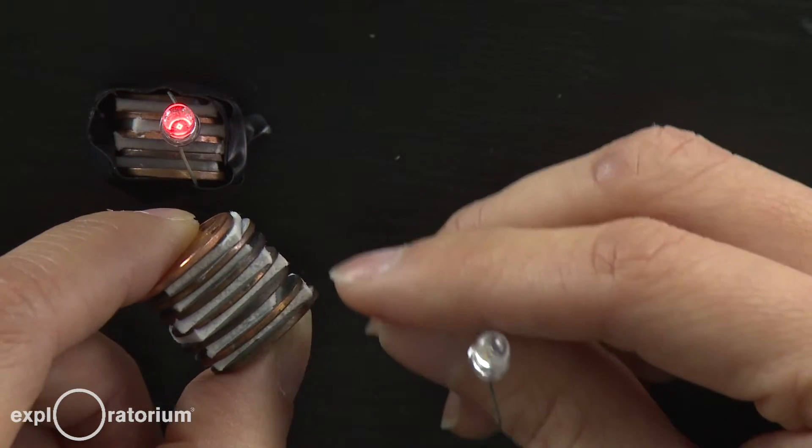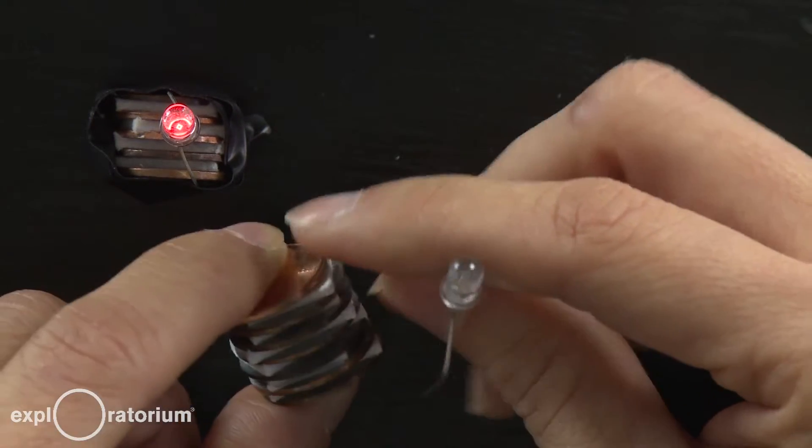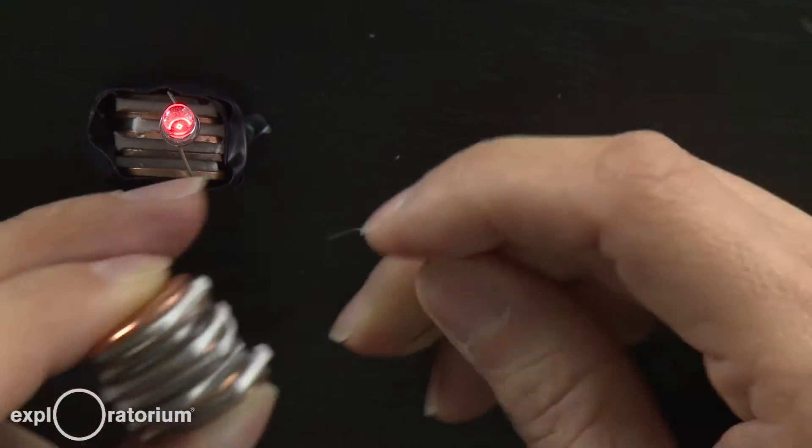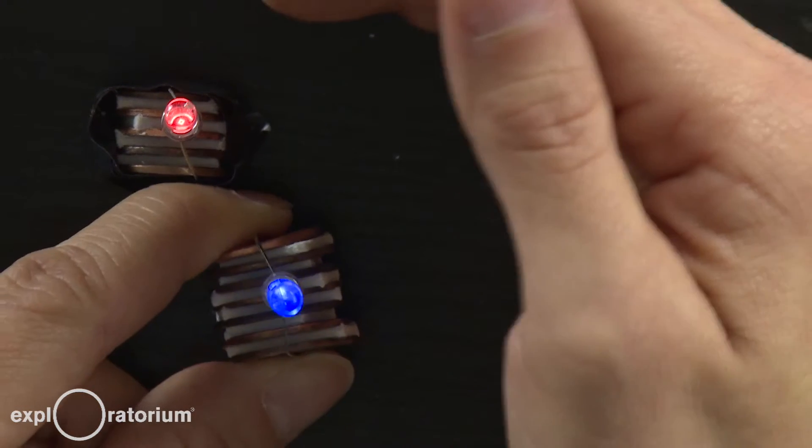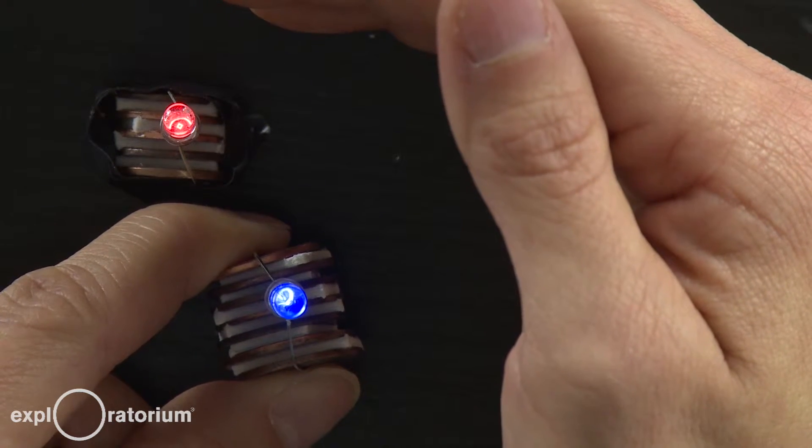So there are six sanded pennies, six soaked mat boards, and one intact penny on top. This battery generates over three volts, and so when I attach my blue LED, now it's powerful enough to light the blue light.